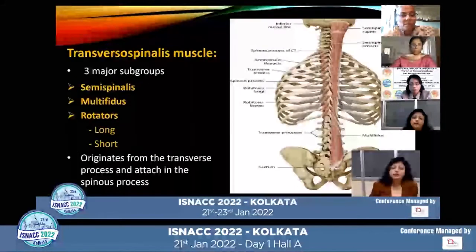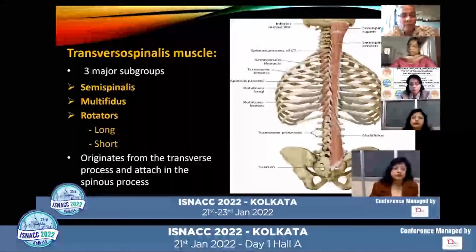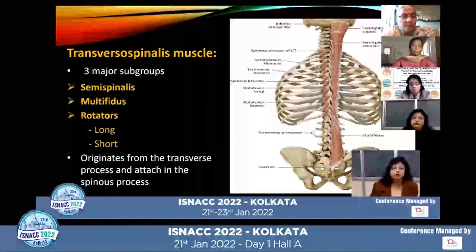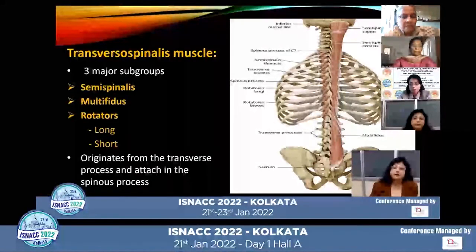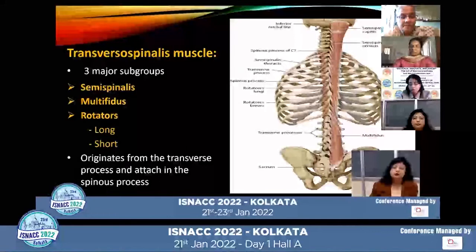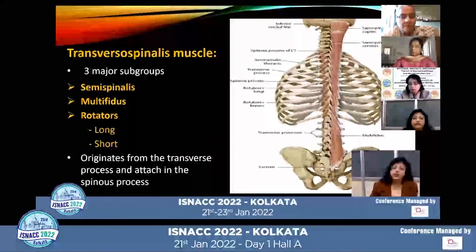Just beneath the erector spinae muscle, there lies another important group of muscles known as the transversospinalis muscles. This also consists of three major subgroups: the semispinalis, multifidus, and the rotatores. All these muscles originate from the transverse process of the vertebrae and attach to the spinous process.